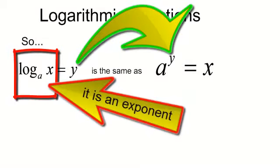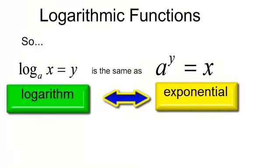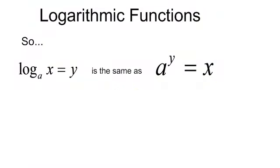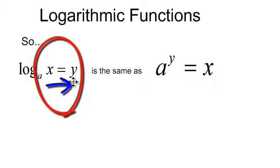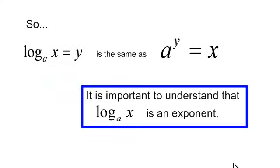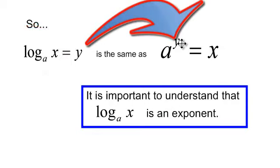We need to learn how to convert back and forth from exponential form to logarithmic form. I use the loop-to-loop. If I want to convert from logarithmic form to exponential form, I take a, raise it to the y, and that equals x — that is my exponential function. It is important to understand that the logarithm base a of x is an exponent. So the logarithm base a of x equals y, which is just this exponent.